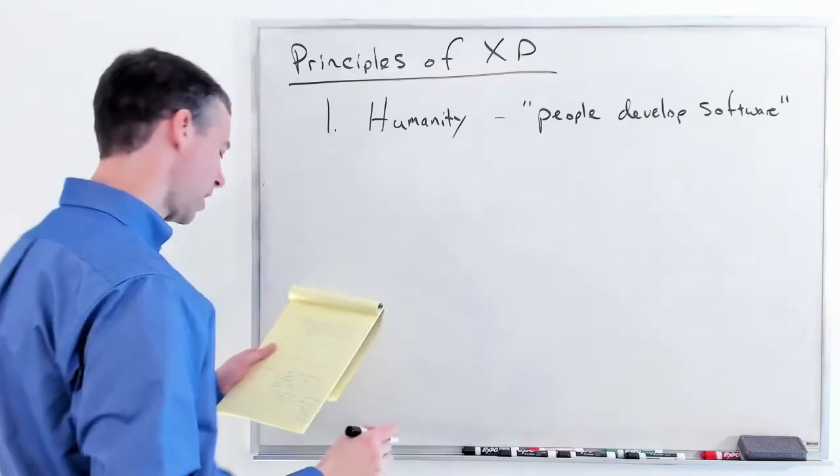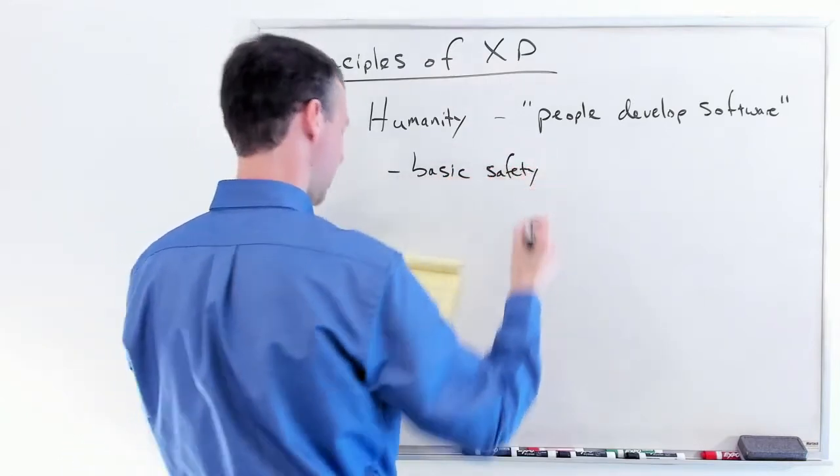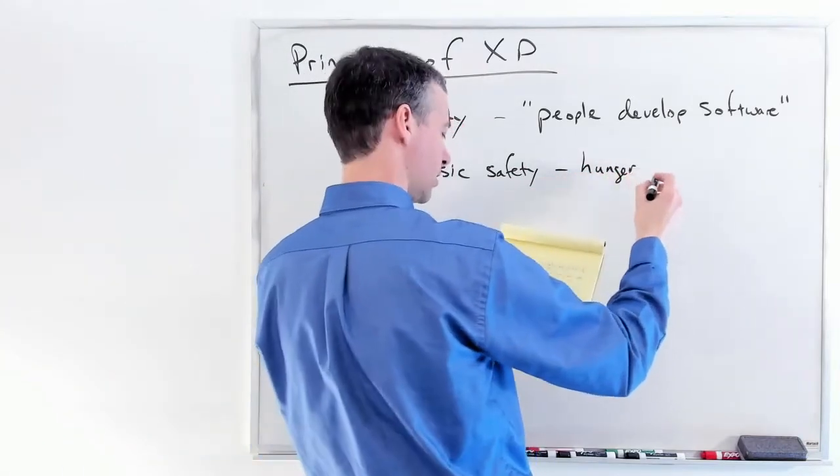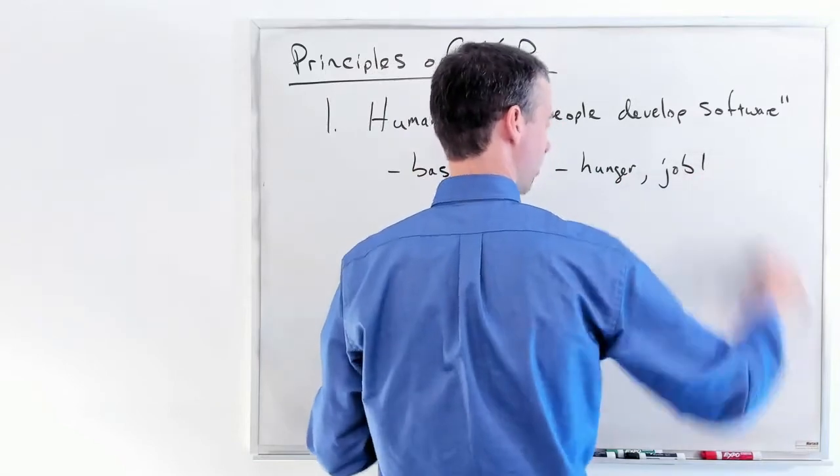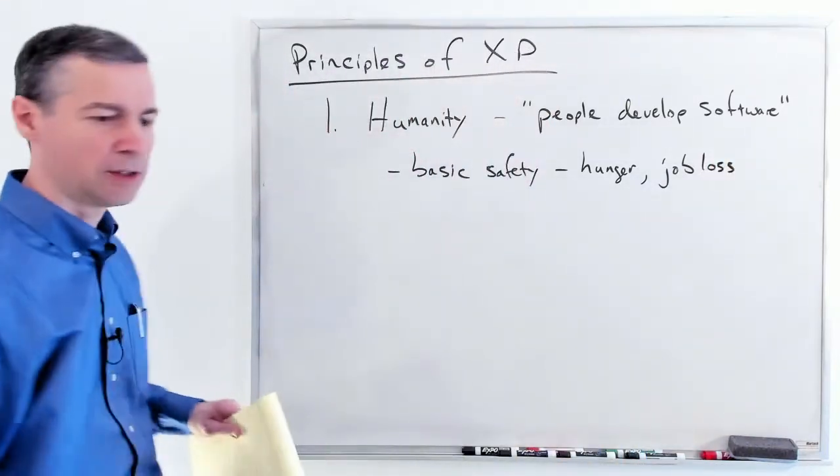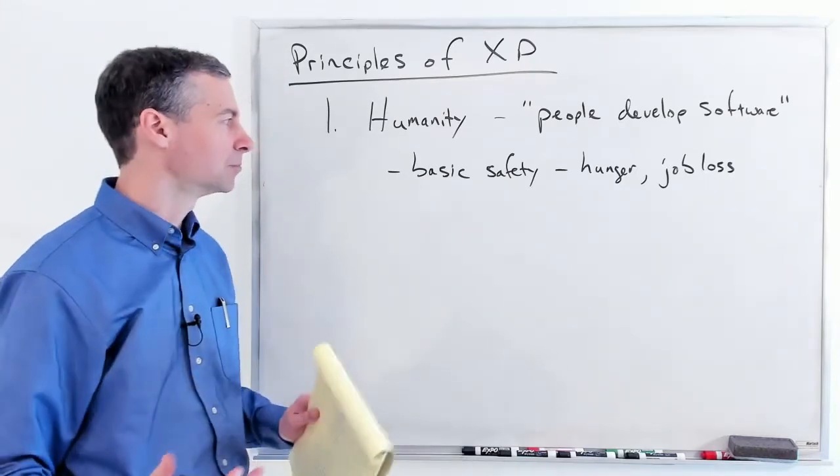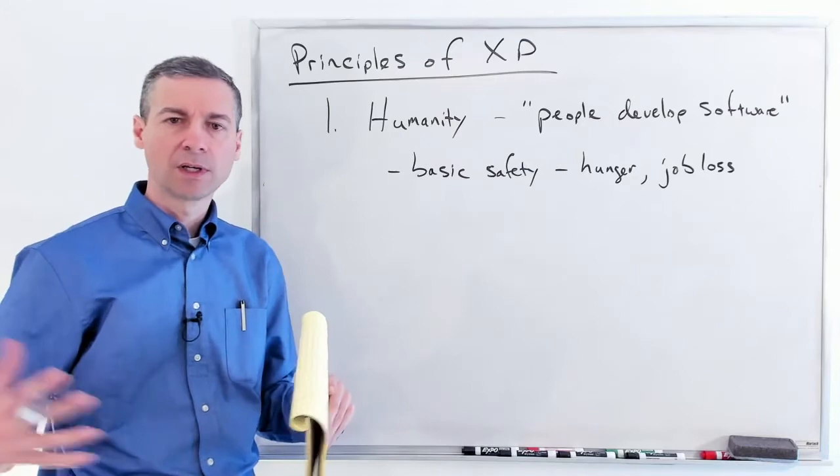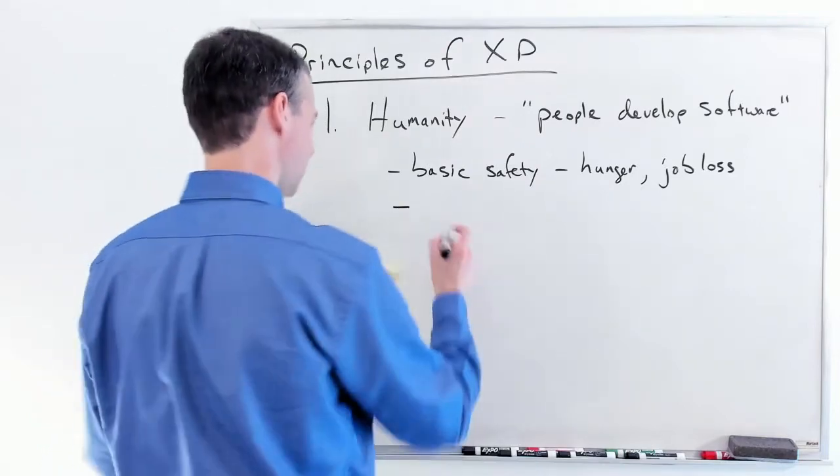There's a whole set of things under humanity that we care about. We care about basic safety—hunger, job loss. If you've got people on a team worried about their security or whether they're safe here, whether they're going to lose their job, you've got to be aware of those basic human functions and meet them.